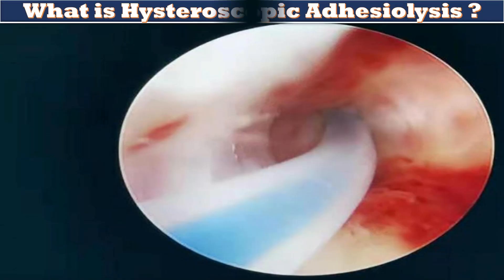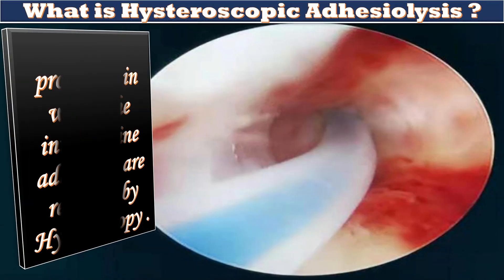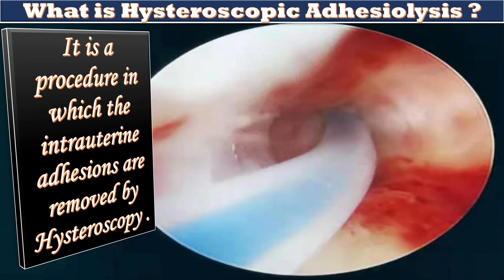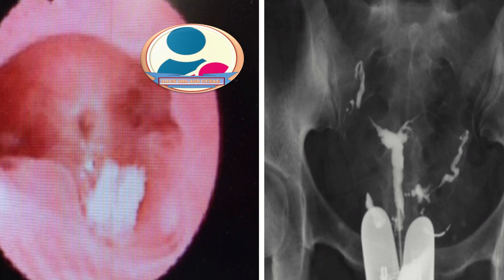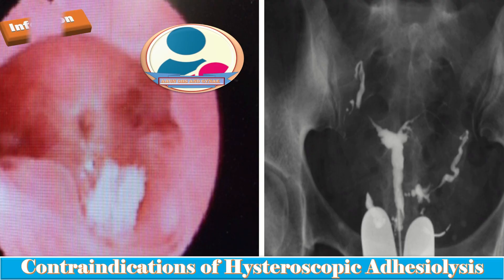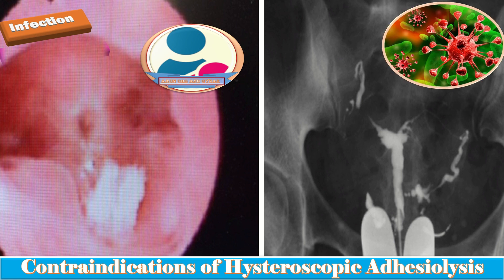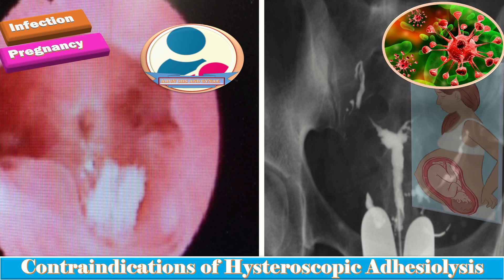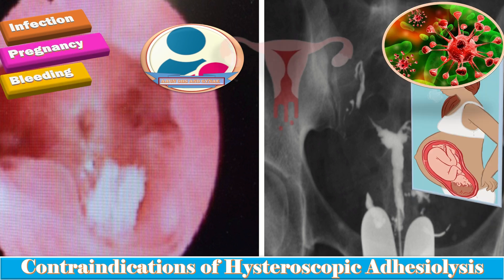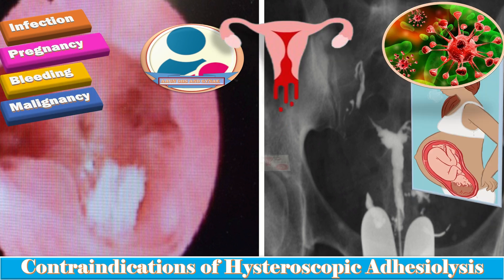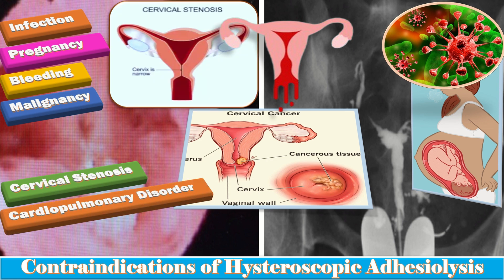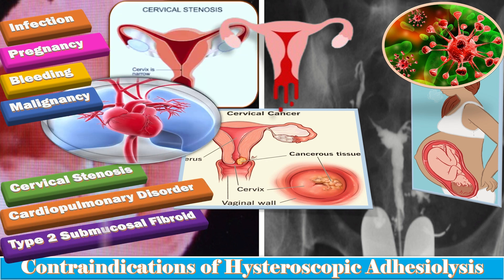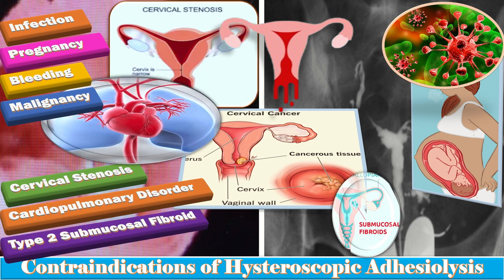Hysteroscopic adhesiolysis is the procedure in which the intrauterine adhesions are removed by hysteroscopy. The contraindications of hysteroscopic adhesiolysis include infection, pregnancy, bleeding, malignancy, cervical stenosis, cardiopulmonary disorder, and type 2 submucosal fibroids.